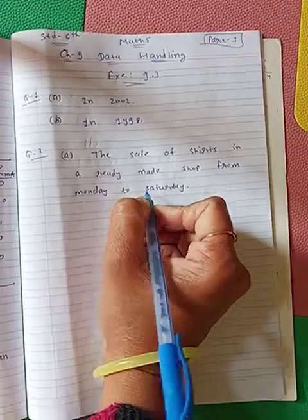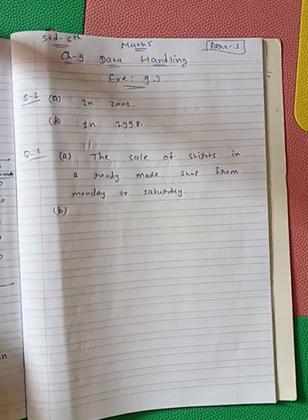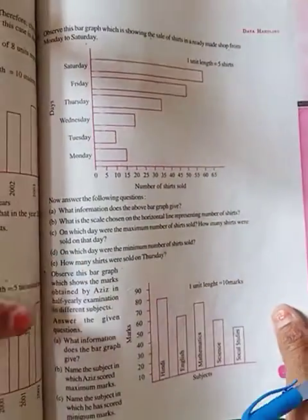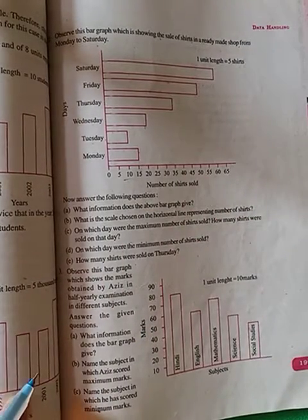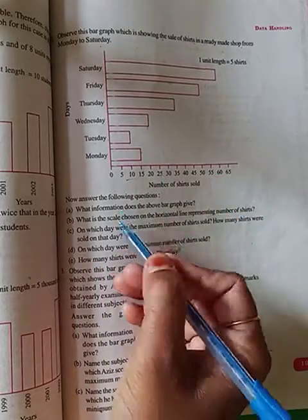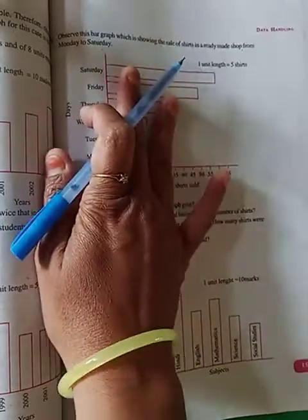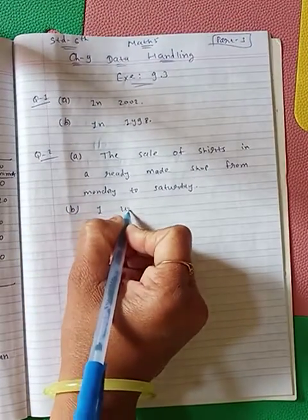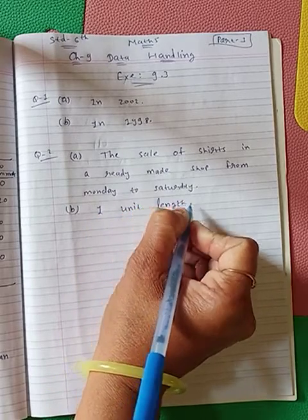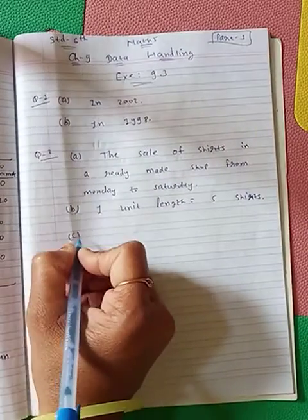Part B: what is the scale chosen on the horizontal line representing number of shirts? The line showing number of shirts is on the horizontal axis. The scale written at the top — what we call the scale, meaning one unit length — so look at the graph and tell. The scale is: one unit length is equal to five shirts. Write that as your answer.